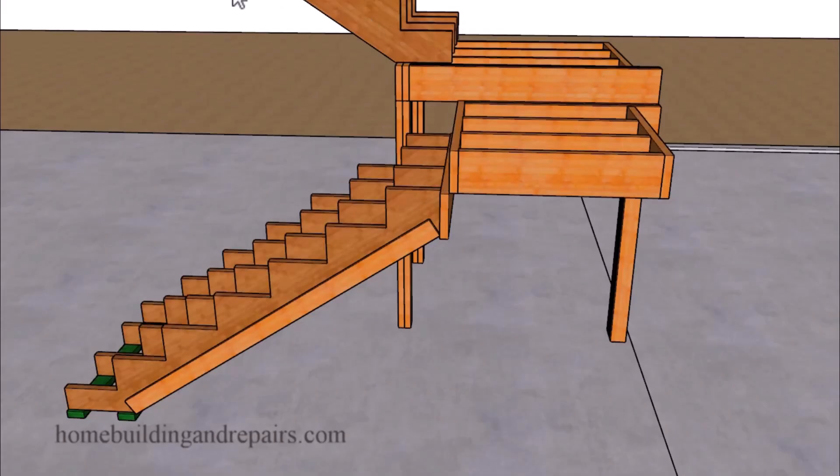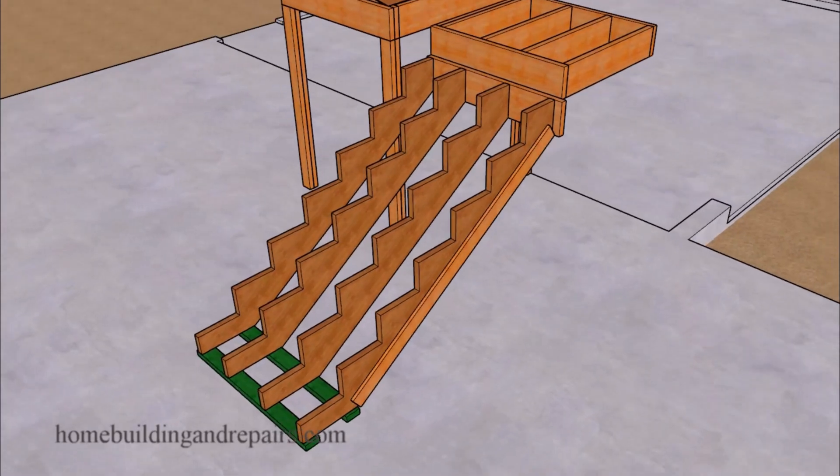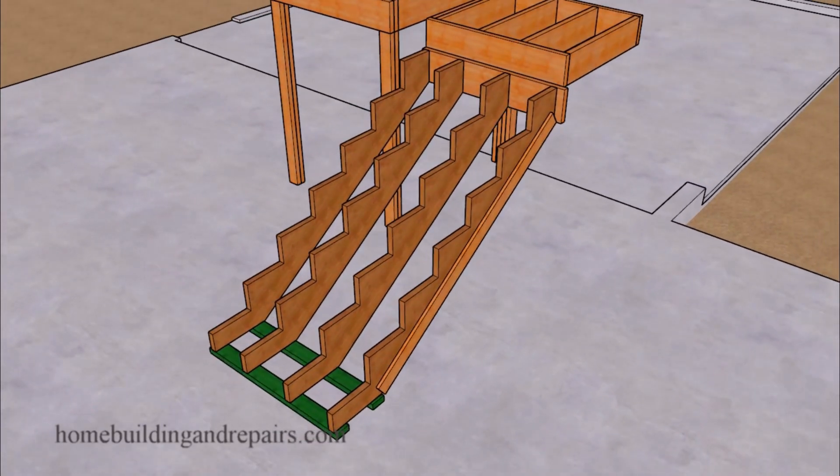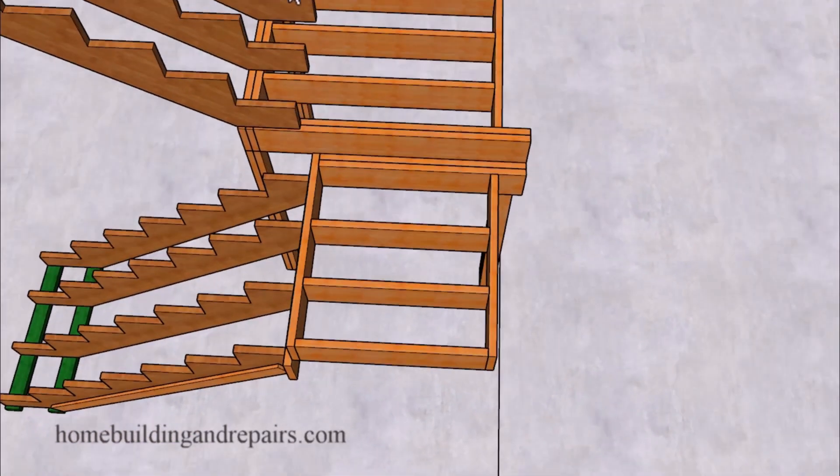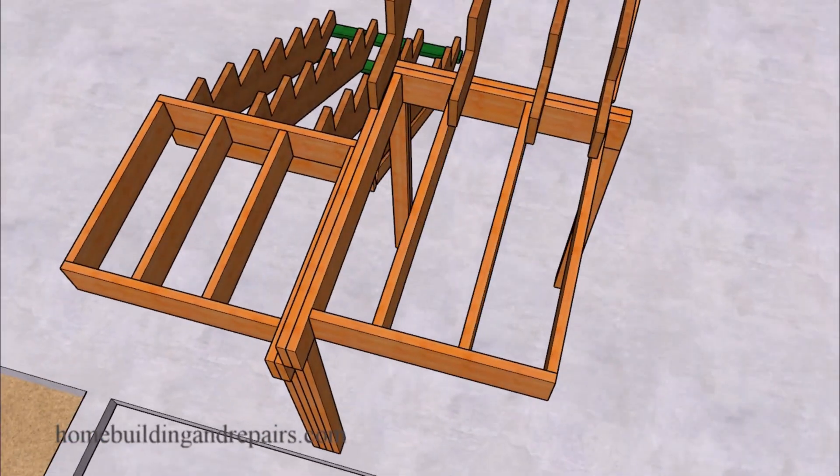Take a look at the stairway without the treads, risers, and landing sheathing. Of course our landing joist will be spaced 16 inches on center, and you can always make it a little shorter if you want to. I've done that for years while building stairs.